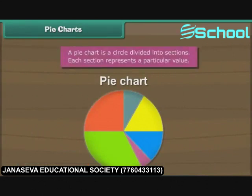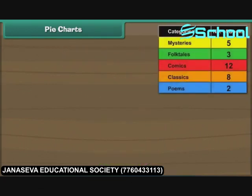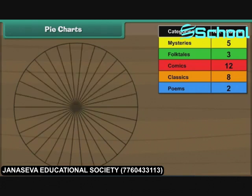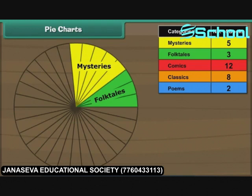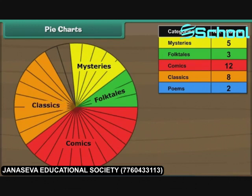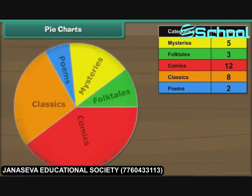A pie chart is a circle divided into sections. Each section represents a particular value. Let us now organize Ravi's data with the help of a pie chart. Here is a circle divided into 30 sections, where each section represents a book. Let us color five adjacent sections yellow and write mysteries. Color the next three adjacent sections green and write folktales. Now count the next 12 sections, color them red and write comics. Next, color eight adjacent sections orange and write classics. Finally, color the remaining two sections blue and write poems. The pie chart is ready.